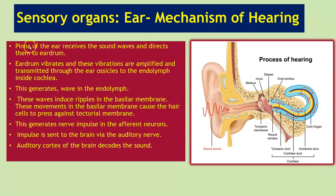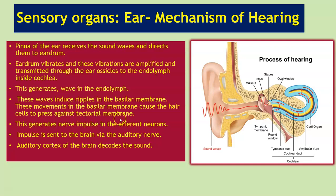Mechanism of hearing: the pinna receives sound waves and directs them to the eardrum. The eardrum vibrates and these vibrations are amplified and transmitted through the ossicles to the endolymph inside the cochlea, generating waves in the endolymph. These waves induce ripples in the basilar membrane, causing the hair cells to press against the tectorial membrane, generating nerve impulses in the afferent neurons. Impulses are sent to the brain via the auditory nerve, and the auditory cortex decodes the sound.